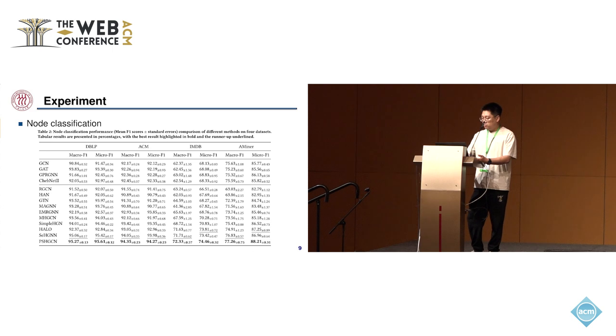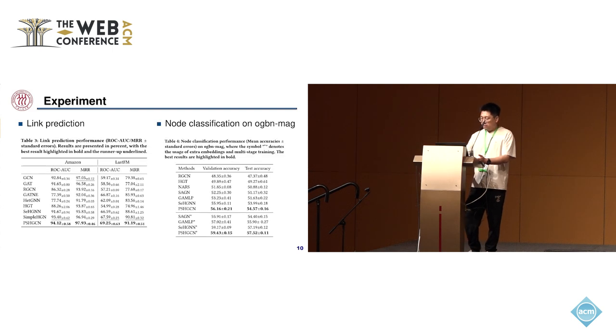In the experimental part, we first conducted node classification experiments to evaluate the performance of PSHGN. Compared to the baselines, PSHGN outperforms them on four datasets. Then we performed link prediction on two datasets, and PSHGN also showed the best performance, demonstrating its effectiveness on the link prediction task.